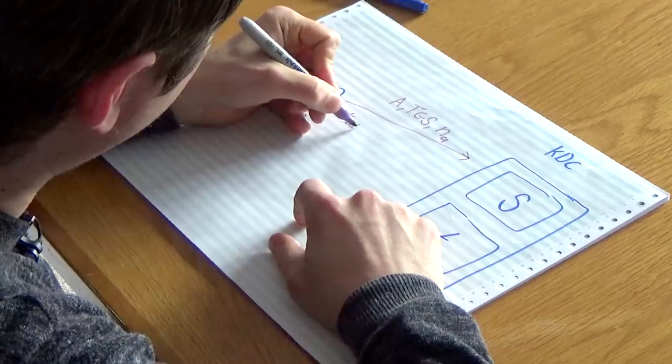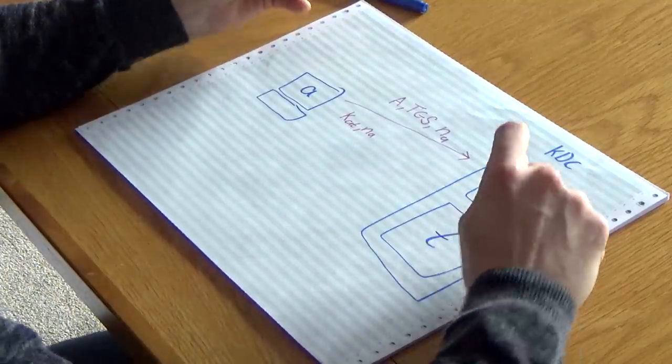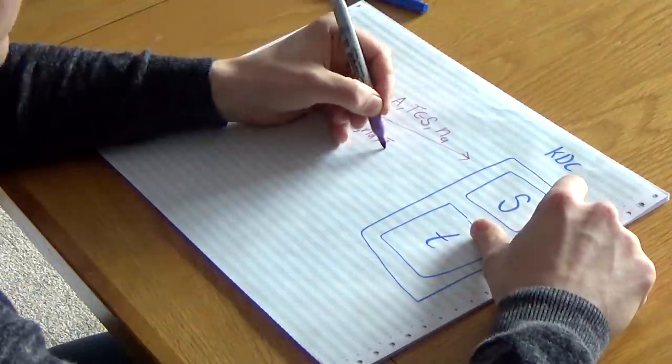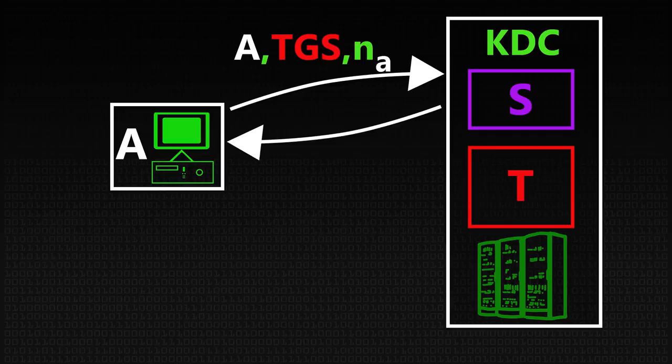Assuming it allows me to talk to T, it's going to send me some messages that mean I can then talk to T. So the first one is going to be, here's a key, K_AT, that you can use to talk between these two, here's your nonce back again to prevent replay attacks, this is the current time, this is the lifetime of this ticket, and you're okay to talk to the ticket granting server.